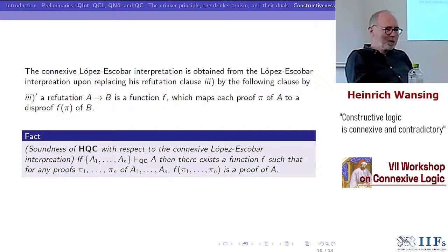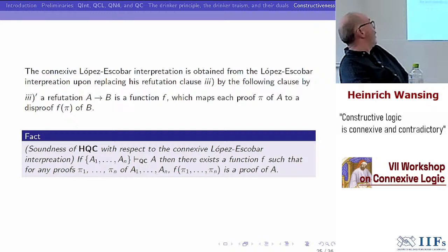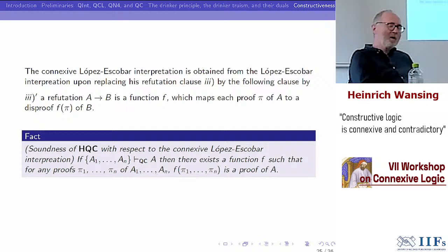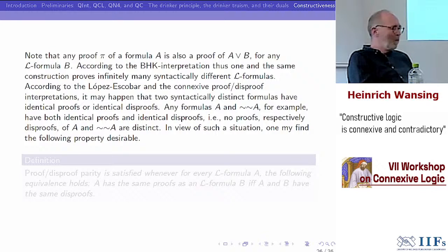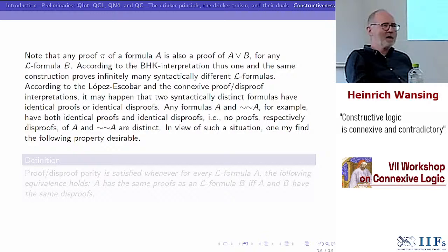The construction C refutes A or B if C is a pair (D, E) and D refutes A and E refutes B. The construction C refutes A implies B if C is a pair (D, E), D proves A, and E refutes B — so not(A implies B) is understood as A and not-B. The construction C refutes 'not A' if C proves A. The strong negation is a device that toggles between proofs and refutations. We assume that both the proofs and disproofs of atomic sentences are primitive. The combination of the BHK interpretation with López Escobar's disproof clauses gives the López Escobar interpretation. First-order Nelson logic N4 is sound with respect to this interpretation.